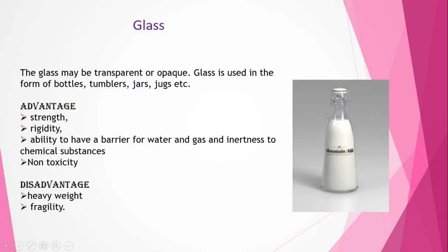Let us first discuss about the conventional materials used for packaging of dairy products. Glass is one conventional material used long back. The glass may be transparent or opaque and is used in the form of bottles, tumblers, jars, jugs, etc. The main advantage of glass is that it has good strength, rigidity, and excellent barrier properties, especially to water and gas, and it is highly inert to chemicals and non-toxic. The disadvantage of glass is that it is heavy in weight and highly fragile.